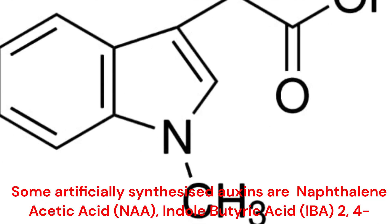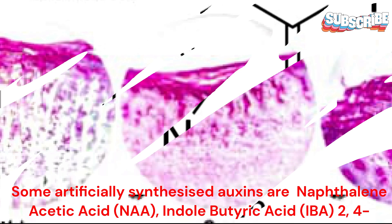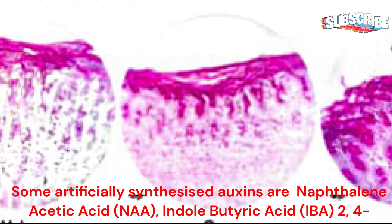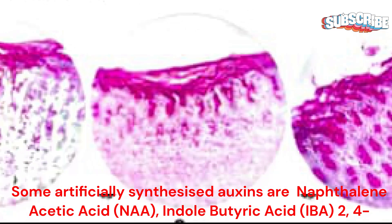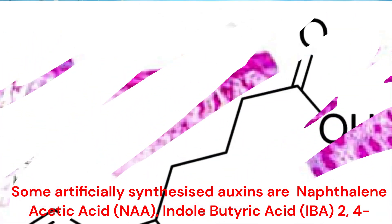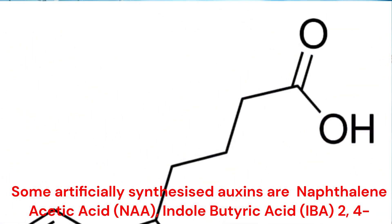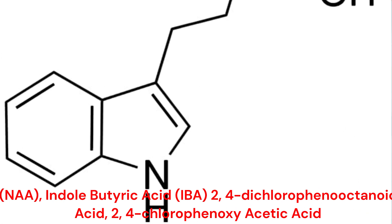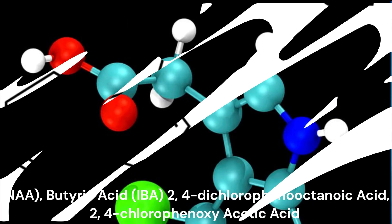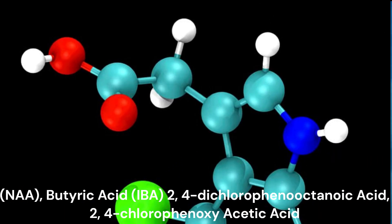Some artificially synthesized auxins are naphthalene acetic acid (NAA), indolebutyric acid (IBA), 2,4-dichlorophenoxyacetic acid, and 2,4-chlorophenoxyacetic acid.